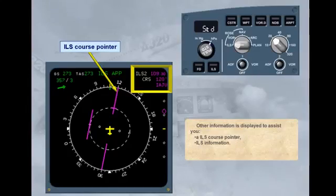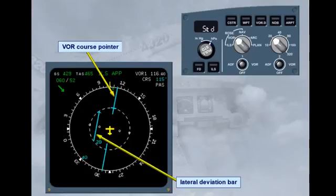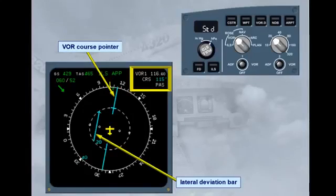Selecting Rose VOR mode: the Rose VOR mode is another raw data display. On the display there is now a course pointer and a lateral deviation bar for the VOR — in this case, VOR 1. To have this display, a course must have been selected on the MCDU radio navigation page. Like Rose ILS, the information about the tuned frequency, the selected course, and which NAVAID — here, Papa Alpha Sierra — is displayed in the top right-hand corner.